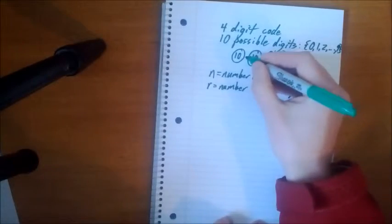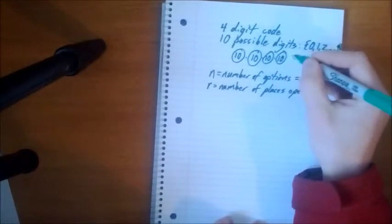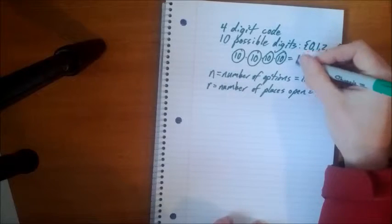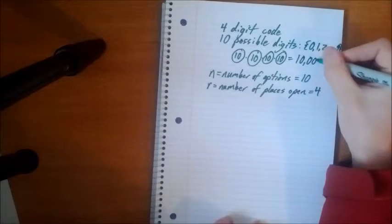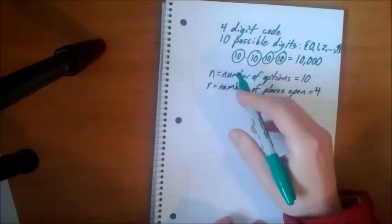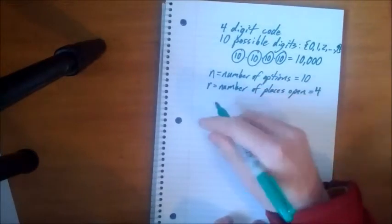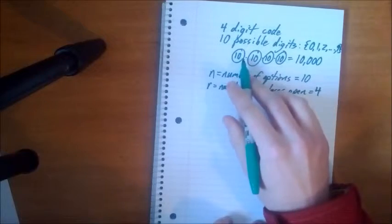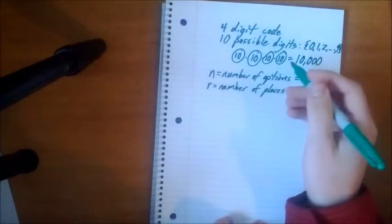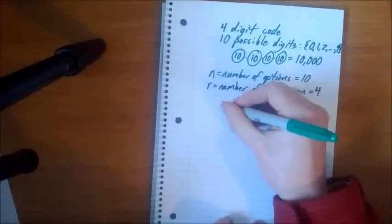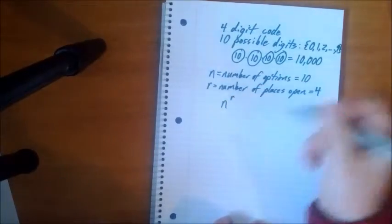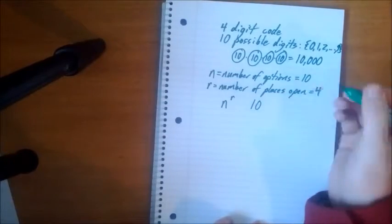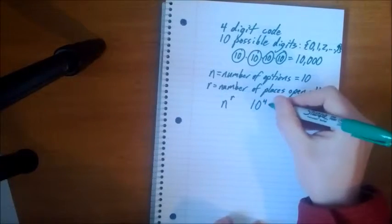So all we have to do using the multiplication principle again is multiply. And the answer you'll get will be 10,000. So there is another thing you can notice here. You can just make a simple exponential expression out of this. And it's N to the R. So we have N being 10 here and R is 4. So we can say 10 to the 4th.